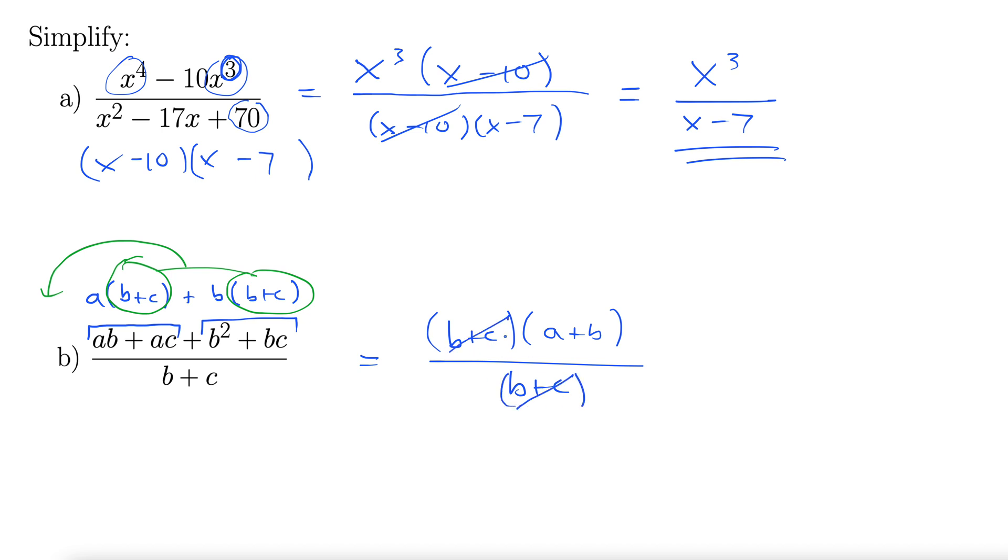We're factoring entire terms. If there was a plus right here, we wouldn't be able to do that. But the pluses up here are inside the parentheses, so we can cancel these two factors, leaving us with a plus b.